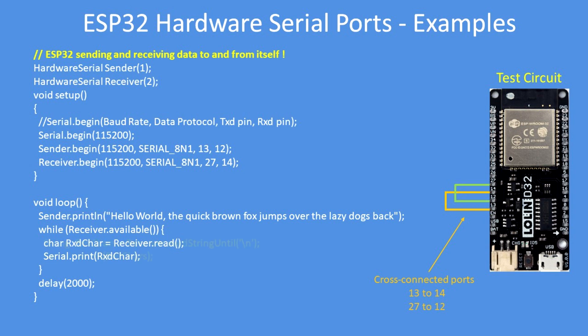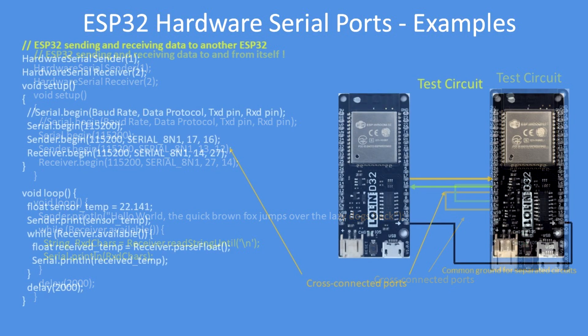Here's another example — the same thing but this time using some of the stream functions. In this case I'm using receiver dot readStringUntil with backslash n as the carriage return. That's another useful augmentation of the program. You can also peek — look ahead into the buffer and see what's coming — so there are lots of examples you can utilize there.